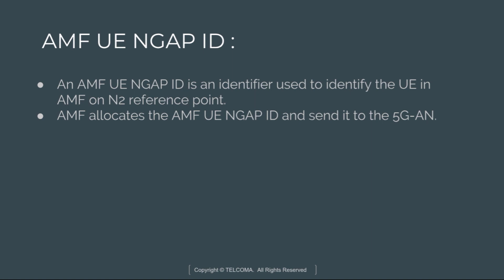Next is the AMF-UE-NGAP ID, where NGAP stands for Next Generation Application Protocol. The AMF-UE-NGAP ID is an identifier used to identify the UE at the AMF over the N2 reference point. The AMF allocates this ID and sends it to the 5G access network. These are all the identifiers in 5G. Thank you.